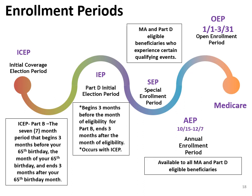Number 3: SEP, the Special Enrollment Period, is for those experiencing unique qualifying events, such as moving when their existing Medicare health plan is not offered in their new location. Number 4: The Annual Election Period is from October 15th to December 7th, during which you can change your Medicare Advantage or standalone prescription drug plan. Number 5: The New OEP, the Medicare Open Enrollment Period, is from January 1st to March 31st, during which you can make one change to your Medicare Advantage plan.